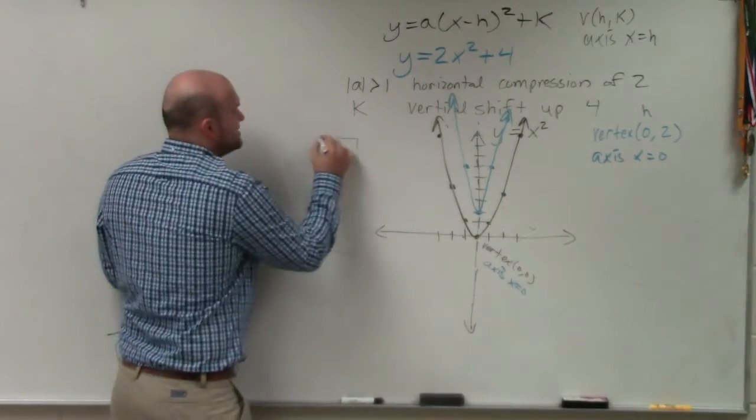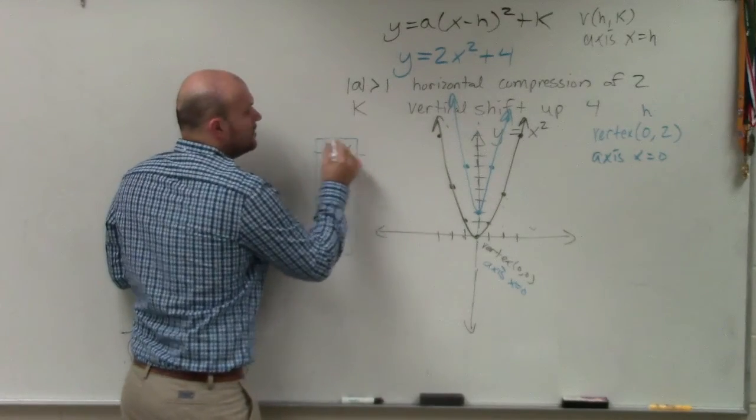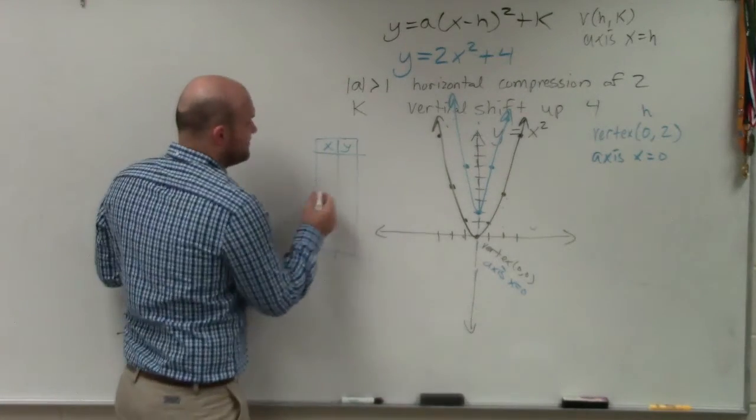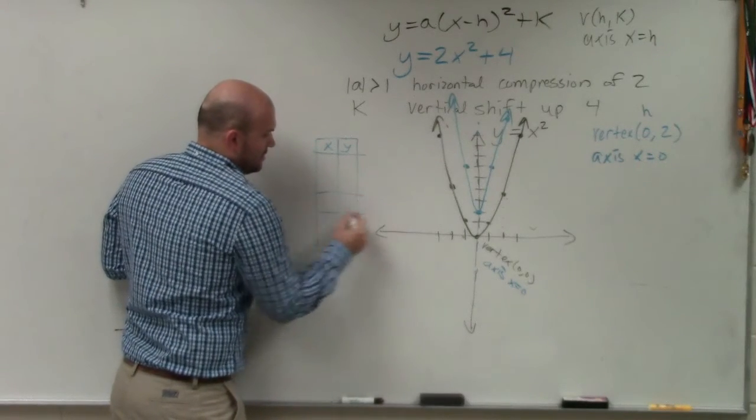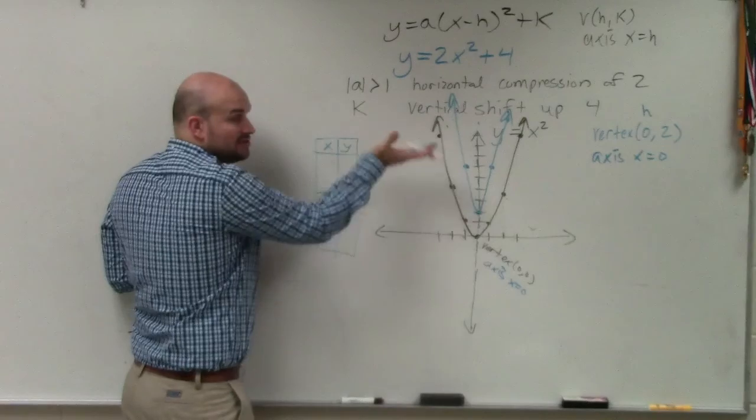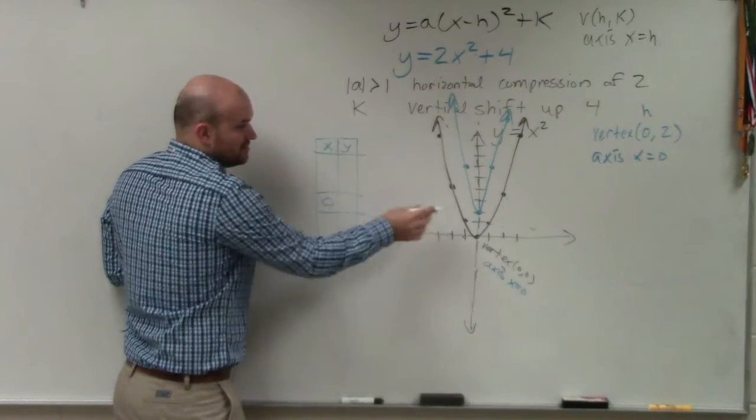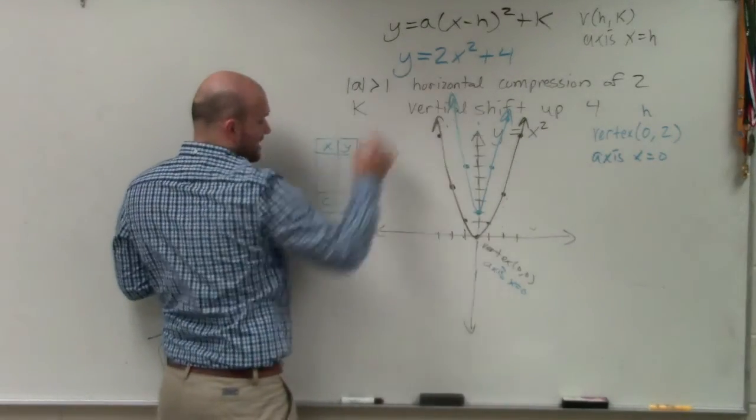So if you remember absolute value, I told you always use the axis of symmetry as your starting point. So the axis of symmetry in this case - all the graph is doing is moving up - is at 0. So at 0, when I plug in 0, I get 4.